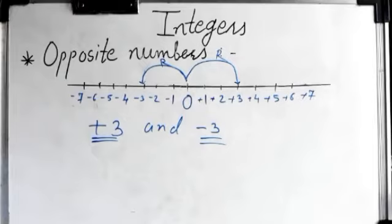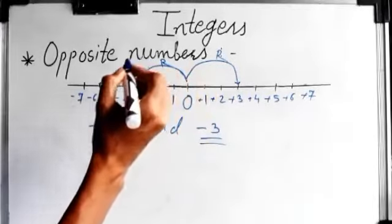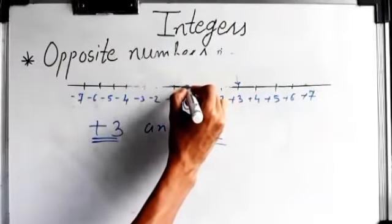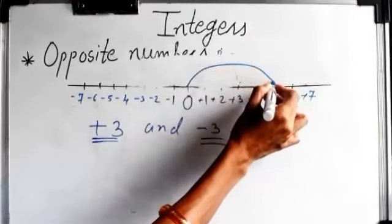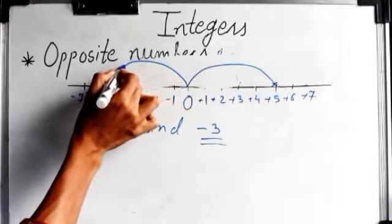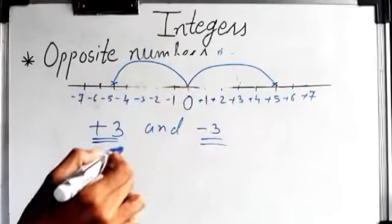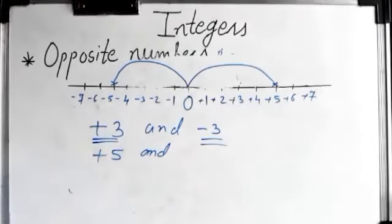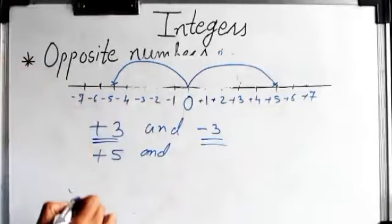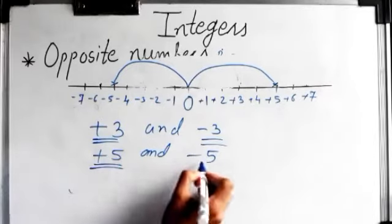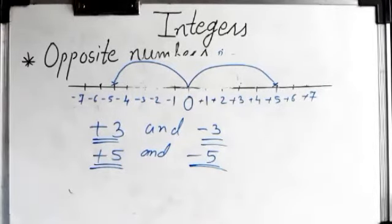Suppose the rabbit jumps five units to the right side, it reaches plus five. Then again it jumps five units to the left side, it reaches minus five. So plus five and minus five are also opposite numbers to each other.